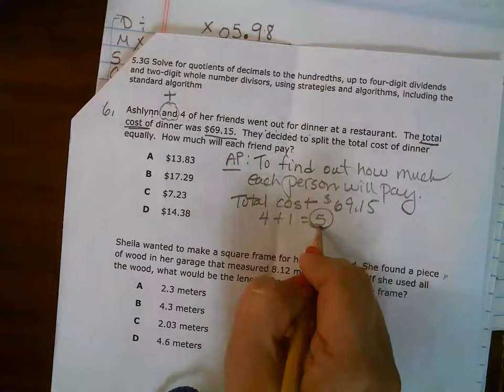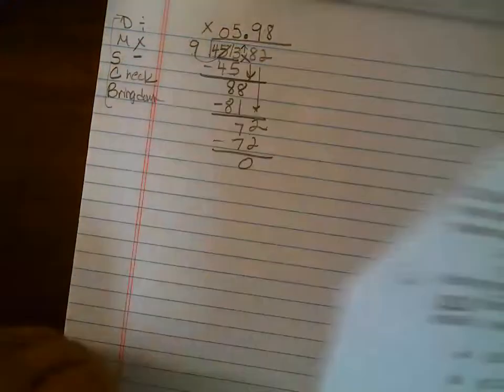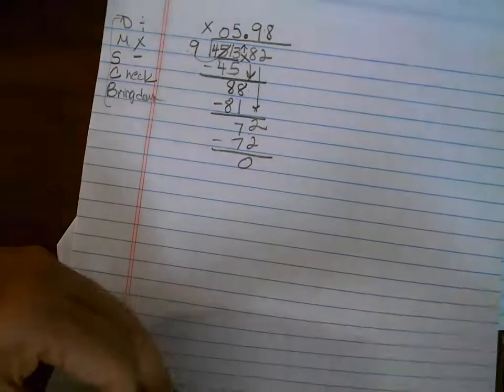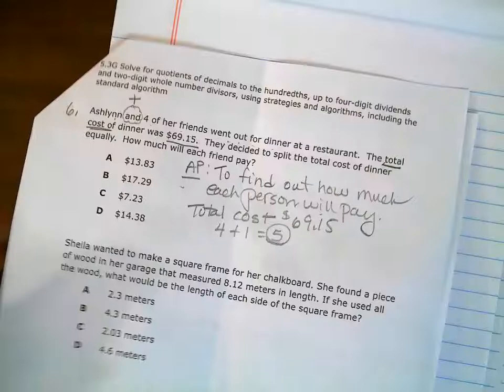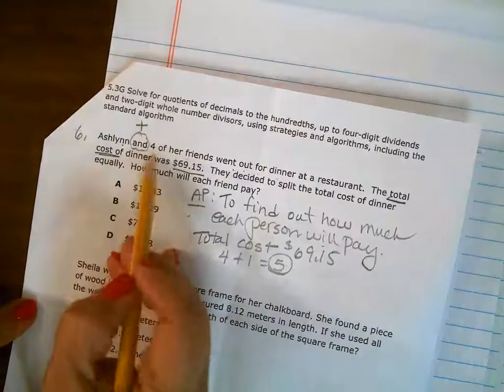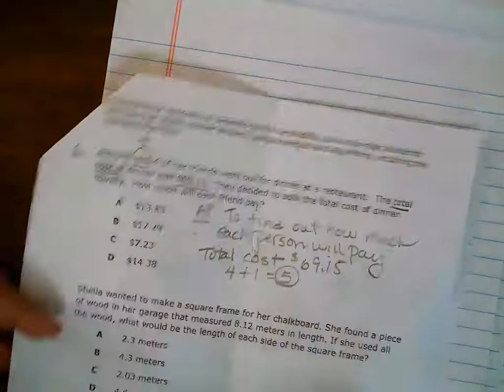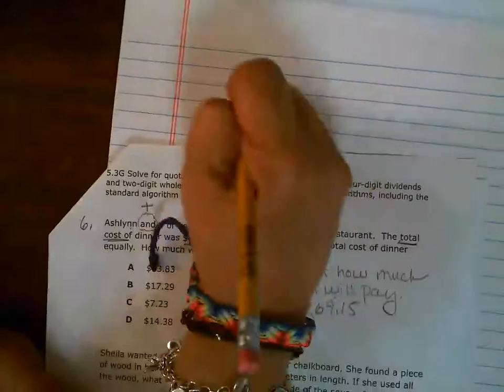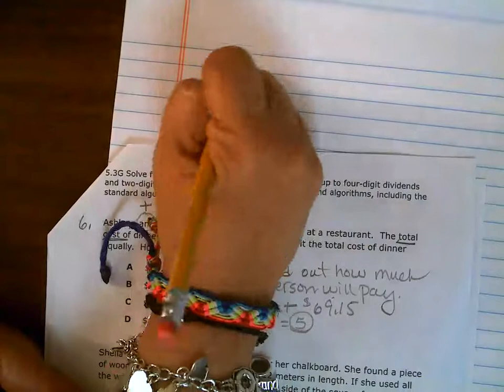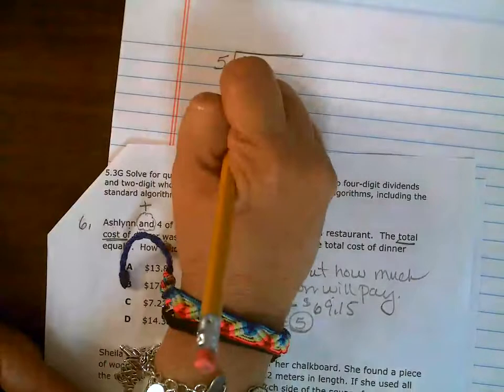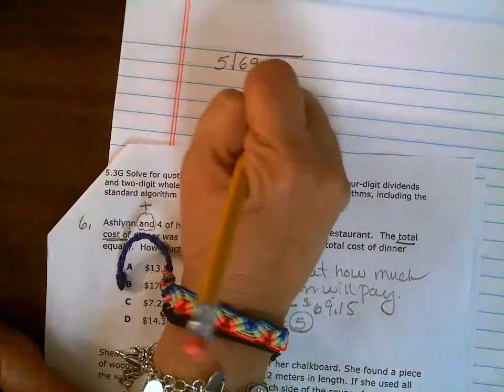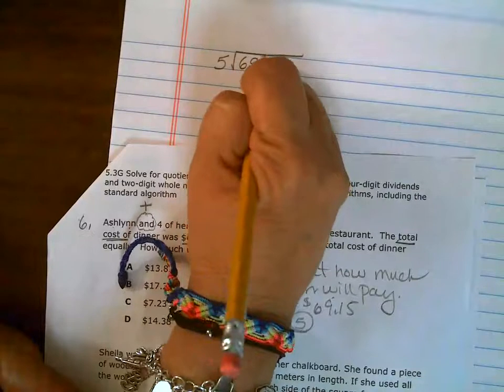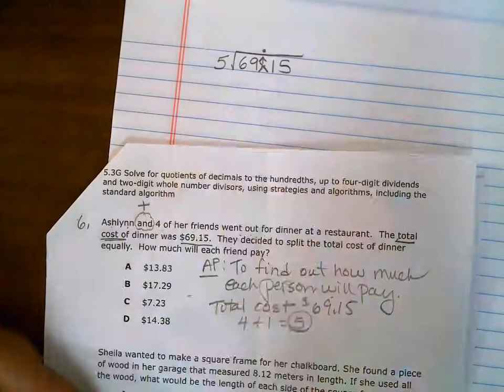All right, so next, what do we need to do? We'll need to divide that up, so I'm going to go ahead and move over to the next page, just going to get a clean sheet because I have four friends plus Ashlyn - that makes it five. So now I'm going to take five goes into 69.15. I'm moving up my decimal and now I'm getting rid of it.